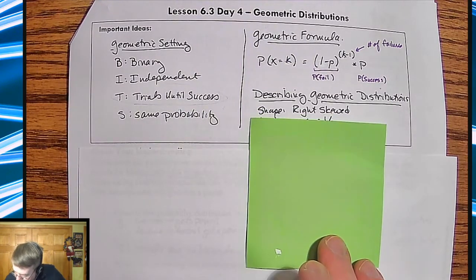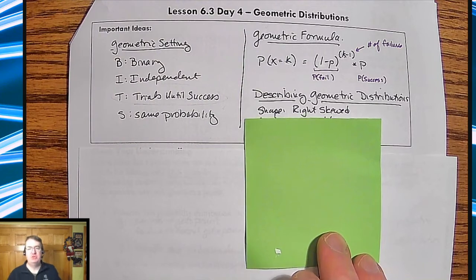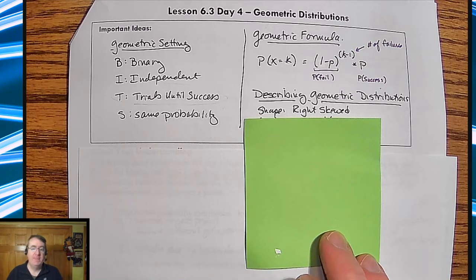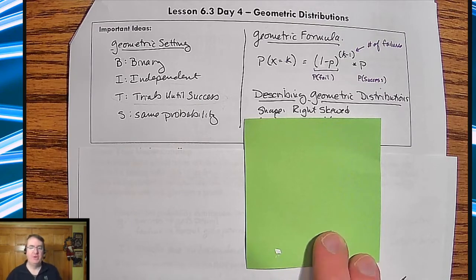In terms of describing it, the geometric distributions are always going to be skewed right for the very reason that we talked about in the previous one. Because you're always multiplying through by a failure, which is going to be less than one, you're taking the previous number and reducing it by a little bit. So that number is going to start high and it's going to tail off as you go.